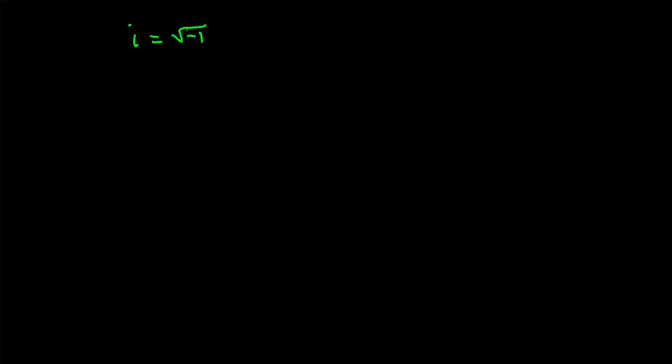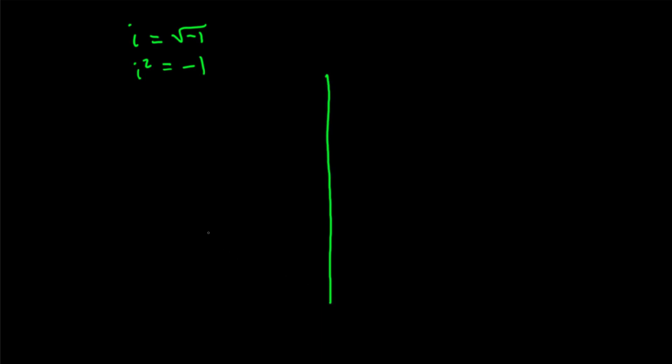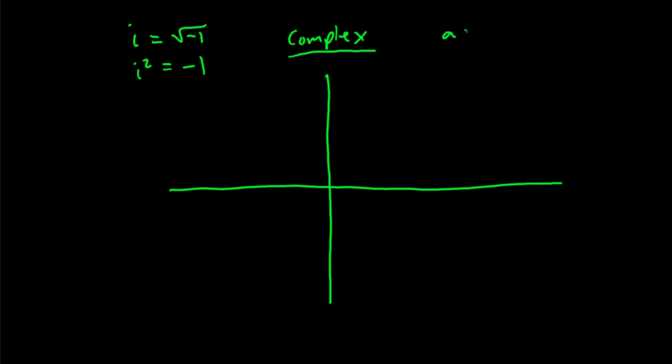Before we dive in, let's define what the Mandelbrot set is. We need to understand that there are real numbers and imaginary numbers. Real numbers are numbers that we can count. Imaginary numbers are defined as i, where i is defined as the square root of negative one. Some people write this as i squared equals negative one, but these are imaginary because the square root of negative one can't actually be taken in real number form, so we just denote this as i.